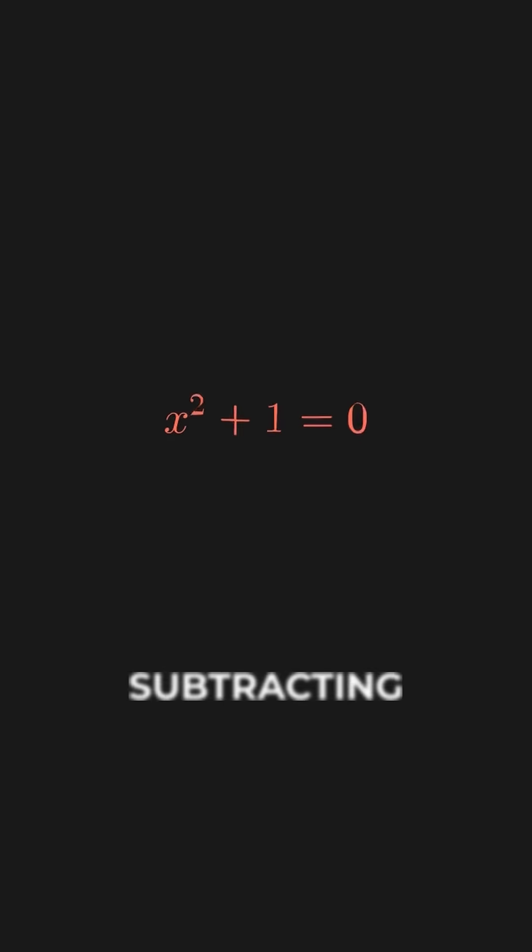Let's solve it ourselves by first subtracting one from both sides, giving us x squared equals negative one. Here's where the issue arises.